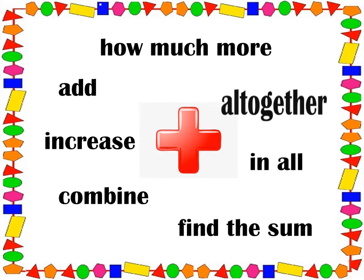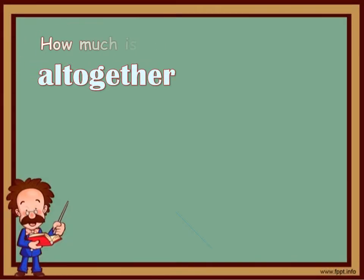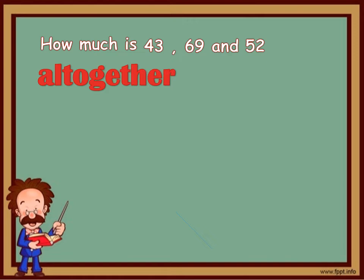Next, we will do the term altogether. The question will be like this. How much is 43, 69 and 52 altogether?